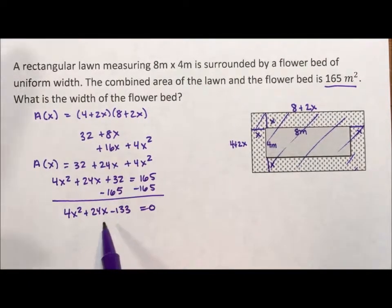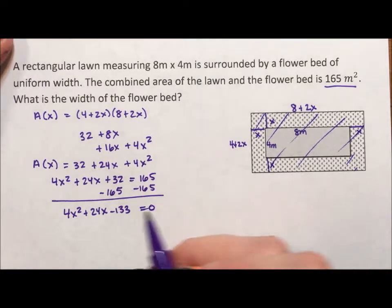So this doesn't look fun to solve. It might be solvable, but you'd have to multiply the 4 times the 133, find a pair that adds up to 24. I am not terribly hopeful for this. So I'm going to use the quadratic formula.